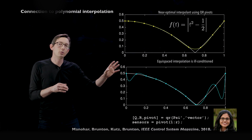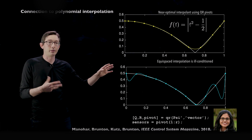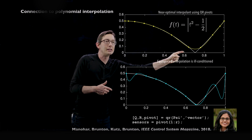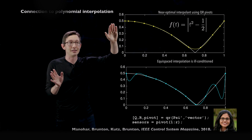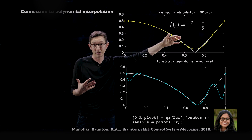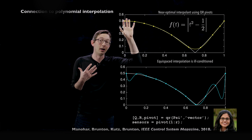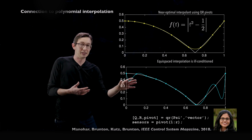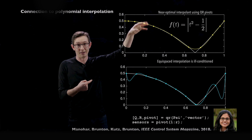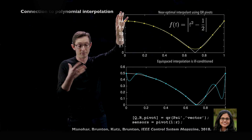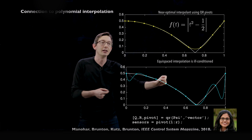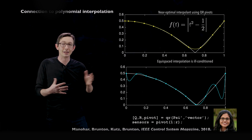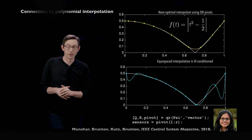There's also a cool connection to polynomial interpolation that Krithika found. The nearly optimal interpolant points from QR factorization — shown as non-evenly spaced yellow points — are related to optimal interpolation points called Fekete points. If you instead placed sensors uniformly, you would get the ringing Gibbs phenomenon we've talked about before. So there's a nice connection to classical interpolation theory.